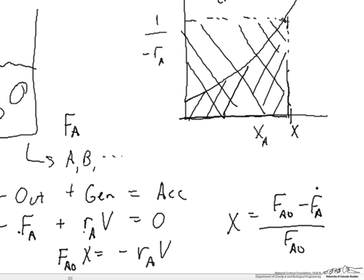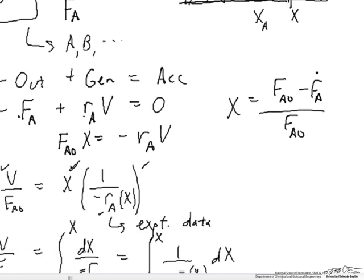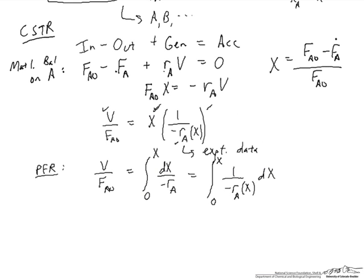We see that what's typical, although not always observed to be the case, is that that area is less than the area associated with the CSTR. Therefore the volume required for a PFR to achieve a given conversion is usually less than the volume required for a CSTR. The CSTR is the area of the rectangle, the PFR is the area under the curve. This difference is a consequence of the fact that the reaction rate is uniform everywhere in a CSTR and varies down the length of a PFR.